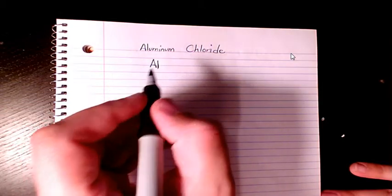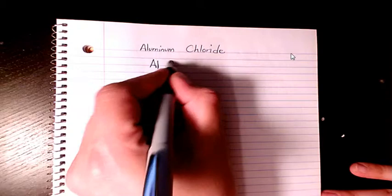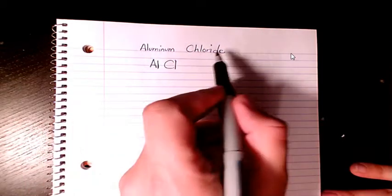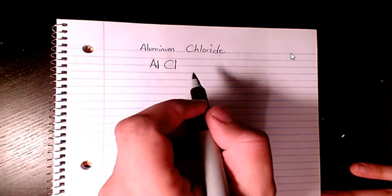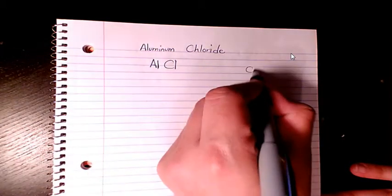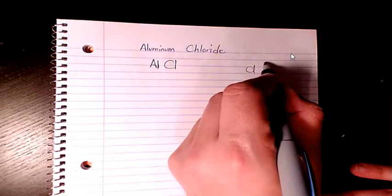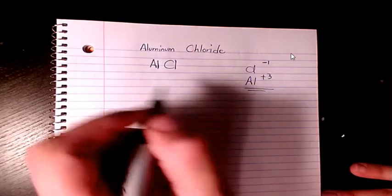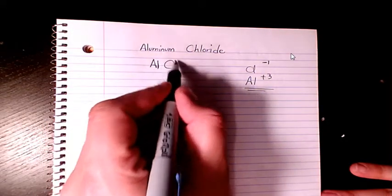Aluminum is from group 3 and chloride is from the halogen group, which is group 7. The charge for chlorine is negative 1 and for aluminum is positive 3. So basically what we have here, the 3 is going to sit here and 1 is going to sit here.